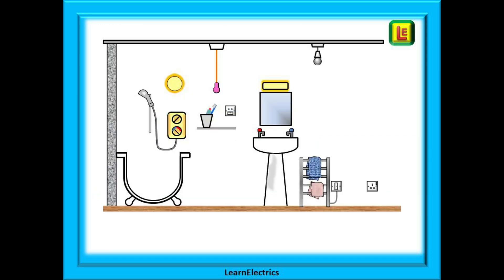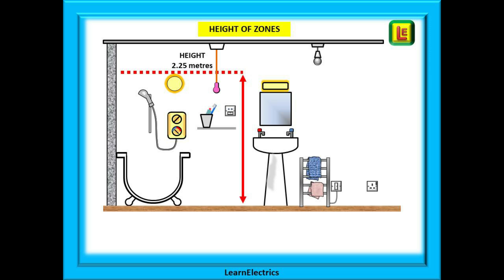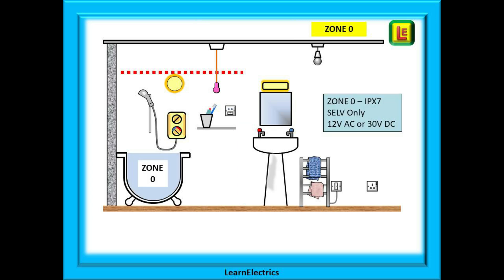Here is our typical bathroom, and almost all of what follows applies equally to rooms with showers. The height of the zones will be 2.25 metres. Most modern bathrooms are around 2.25 to 2.3 metres, but we will imagine here that the bathroom is much higher than this. We will start with Zone 0, considered to be the most dangerous zone if an electrical fault happens, so there are lots of precautions for safety.